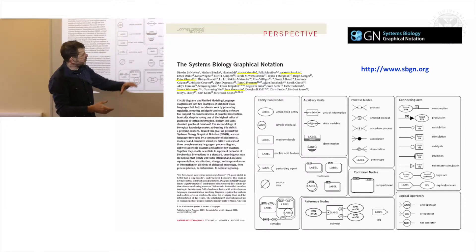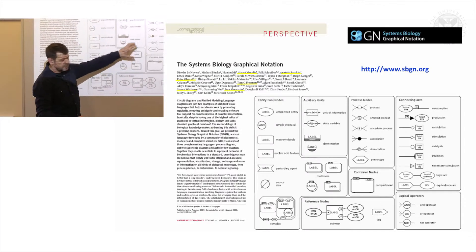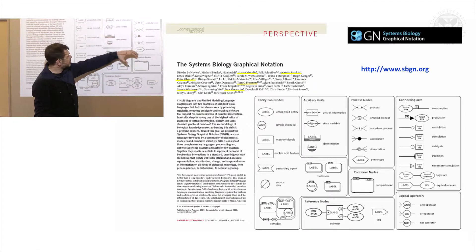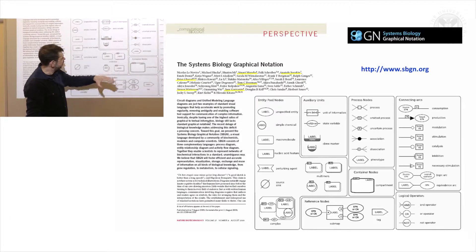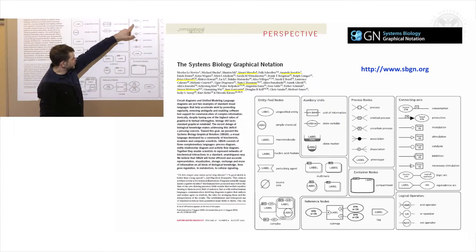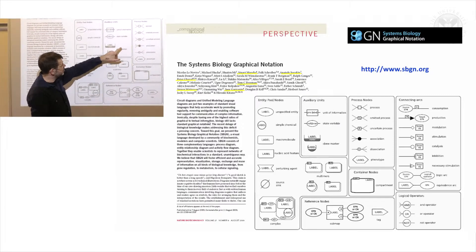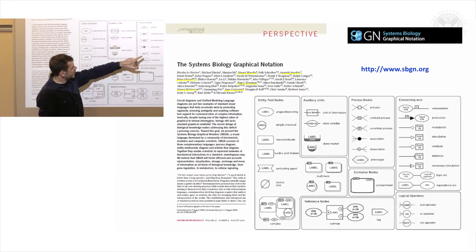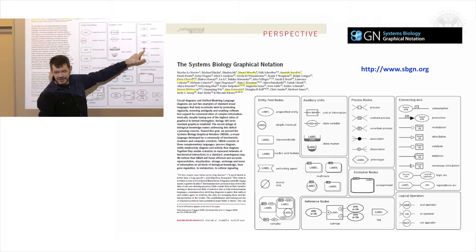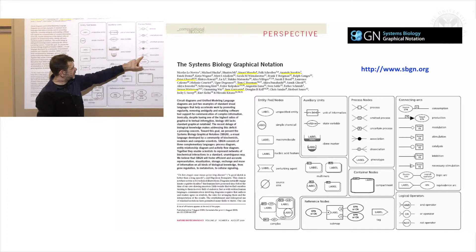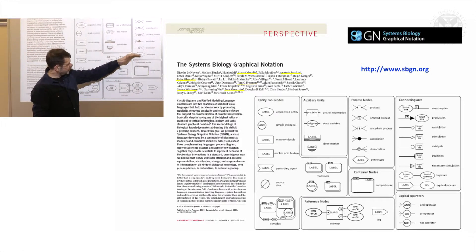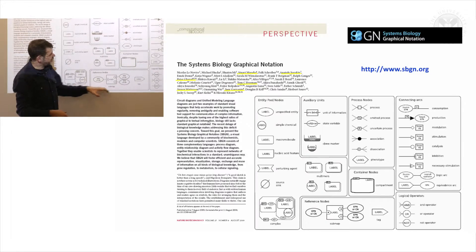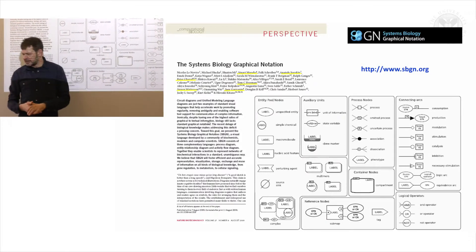Then we have the idea of a process, and there are different types of processes. There's a generic process that doesn't specify what type it is. We have association, which in this case means binding, dissociation, phenotype, and a range of other process types.